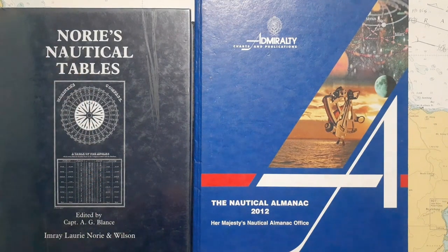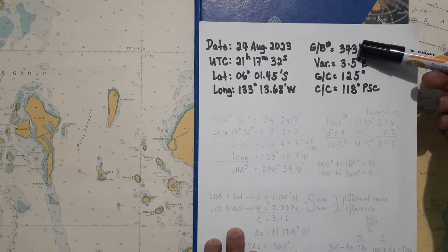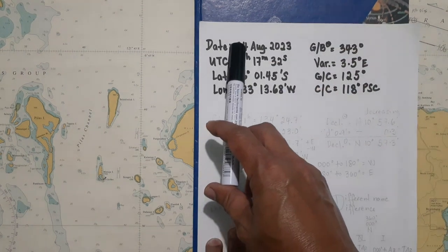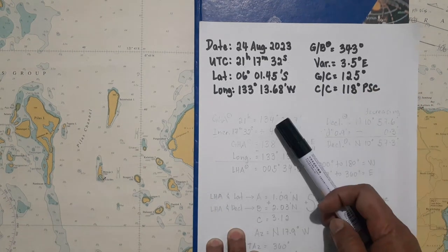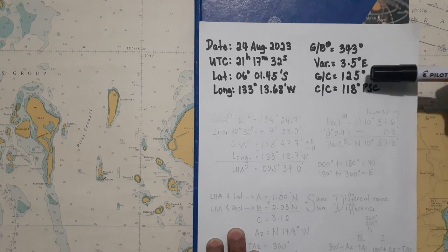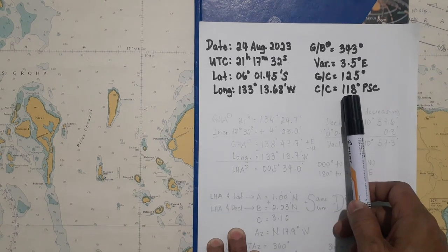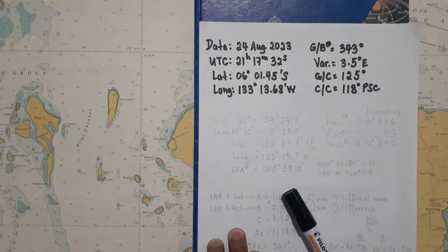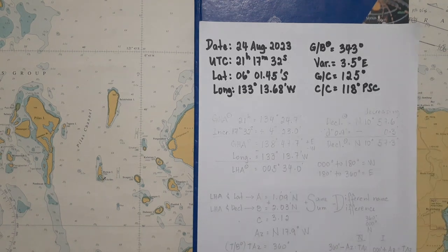In taking the gyro error, first we need the following data. We need to determine the gyro bearing of a selected celestial body — here we choose the sun. You need to determine your date, the time of observation, and the ship's present position taken from your GPS receiver. We also need the magnetic variation, the gyro compass, and your compass course — per ship's compass, meaning the course was taken from the ship's magnetic compass. Before taking the gyro bearing of any celestial body, when you use the gyro repeater it should be aligned with your master gyro.